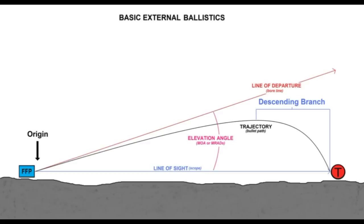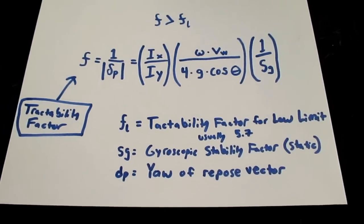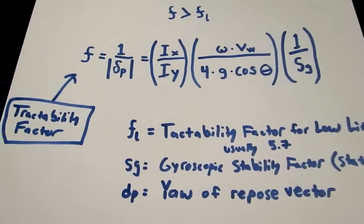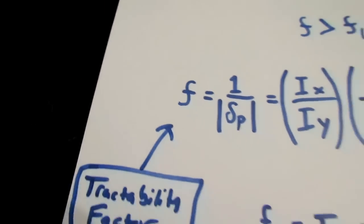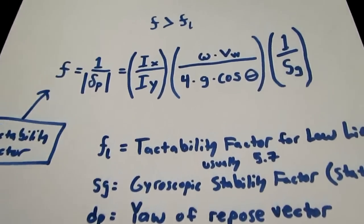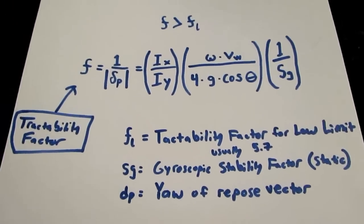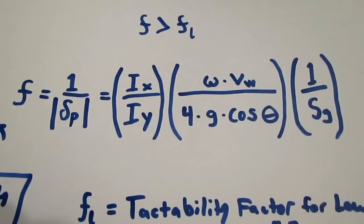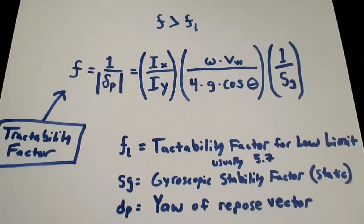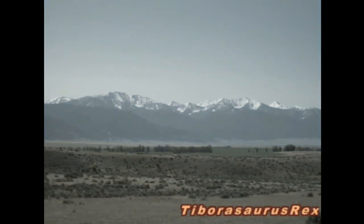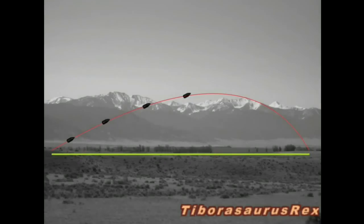Tractability is measuring how well the nose of that bullet is staying on track with its flight path. One thing to note is that the tractability factor is basically proportional to the inverse of the gyroscopic stability factor. So the more gyroscopic stability you have, the less tractability it's going to have. Gyroscopic stability is good for keeping it stable at a certain point, but during the descending leg — especially on a high-angle shot at real long distance where your descending leg angle differs greatly from your angle of departure — gyroscopic stability is going to work against you.